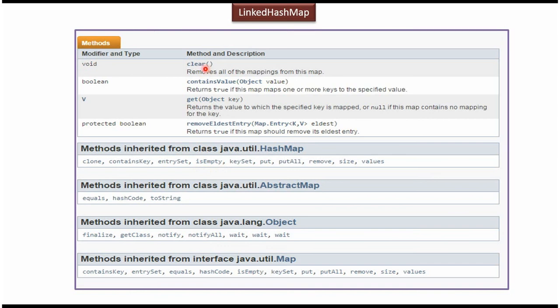To clear all key-value pairs we have the clear method, and to get all the keys we have the keySet method. To get all the values we have the values method. Here you can also see some methods inherited from AbstractMap, methods inherited from Object class, and methods inherited from Map Interface. And this is about LinkedHashMap — thanks for watching.